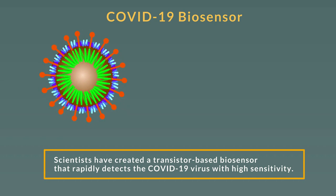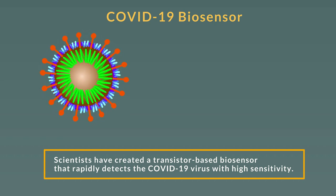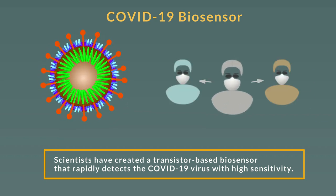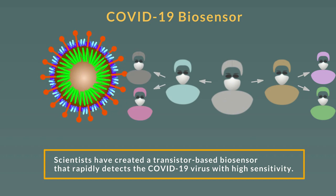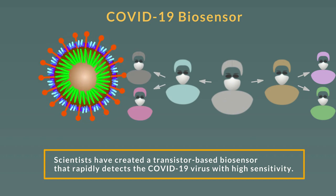The nations that have instituted widespread testing have fared better in the current pandemic. They've been able to identify those individuals who have been infected with the virus and track down their close contacts for quarantine. We require an inexpensive, mass-produced test for rapid screening.